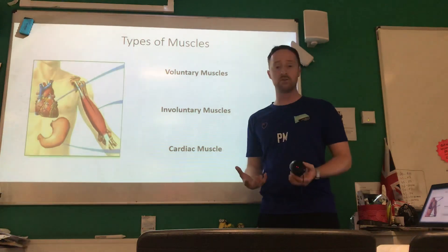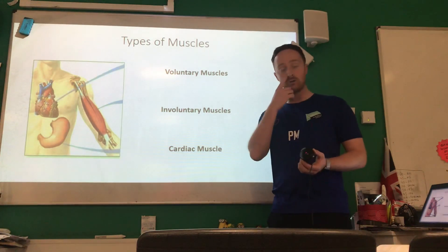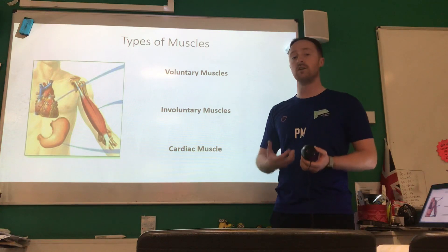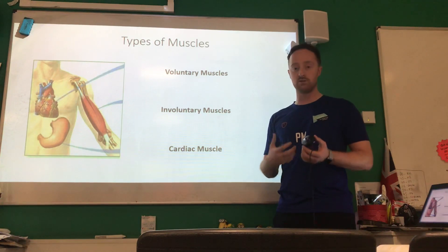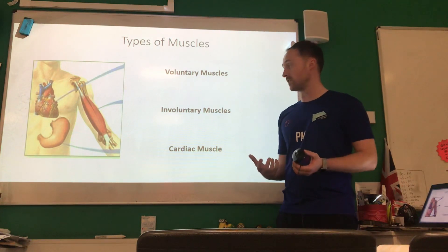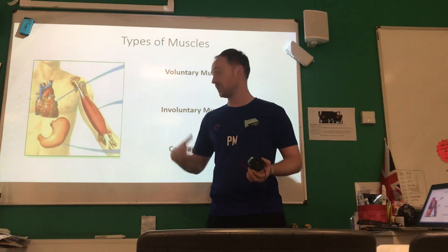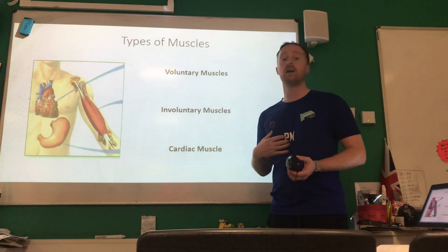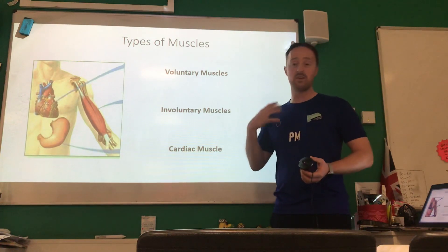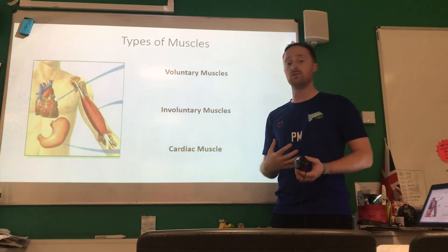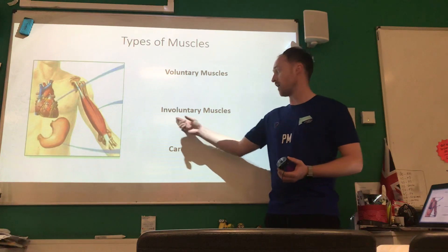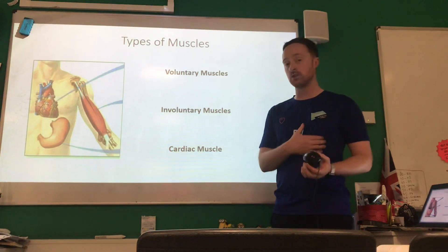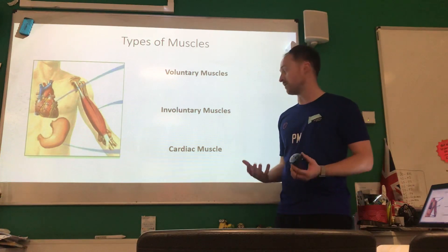We also have involuntary muscles — muscles that are controlled by our central nervous system but we don't have conscious control over them. The body contracts those muscles as and when they're needed. For example, there are lots of muscles in your intestines to help you digest food, and you don't actually control them with your mind — they just work as and when needed. Muscles like the intercostal muscles in the ribcage are an example of involuntary muscles.